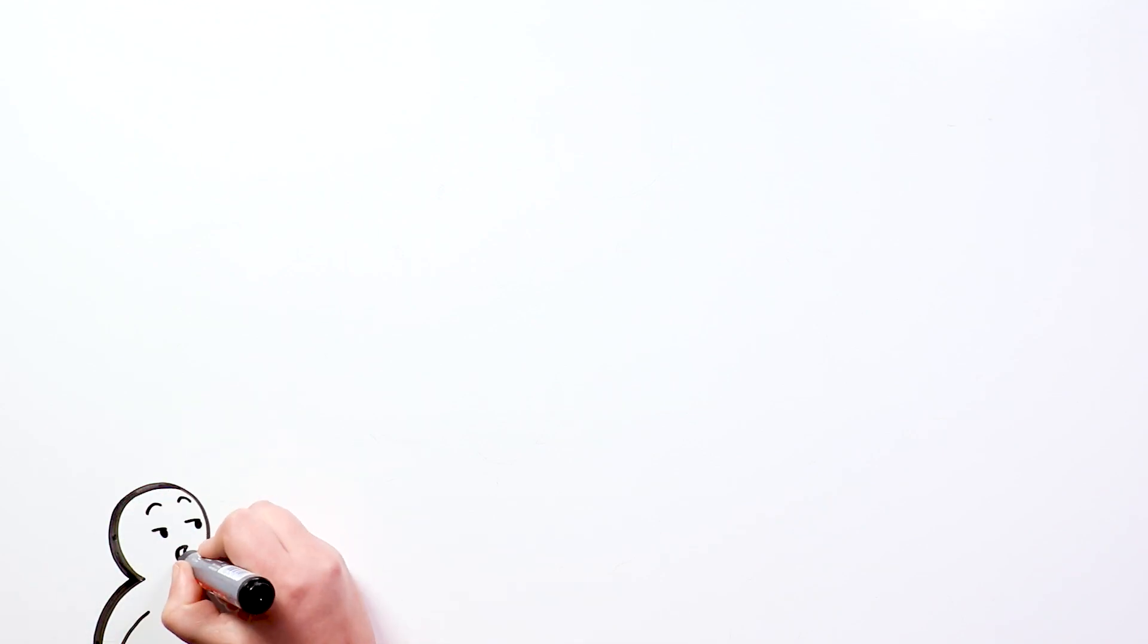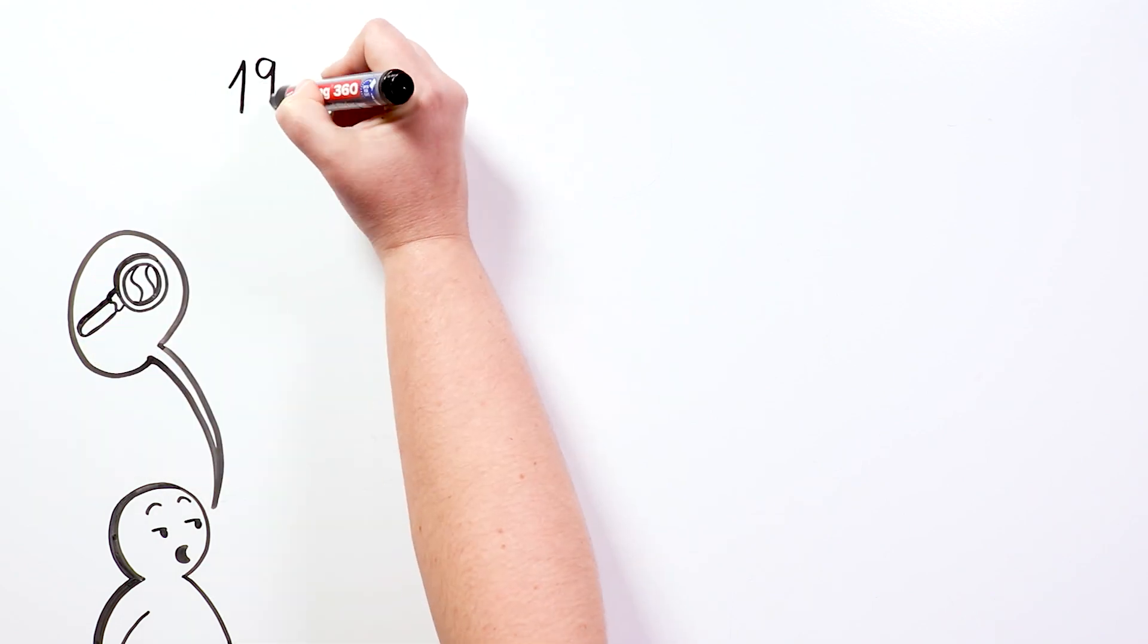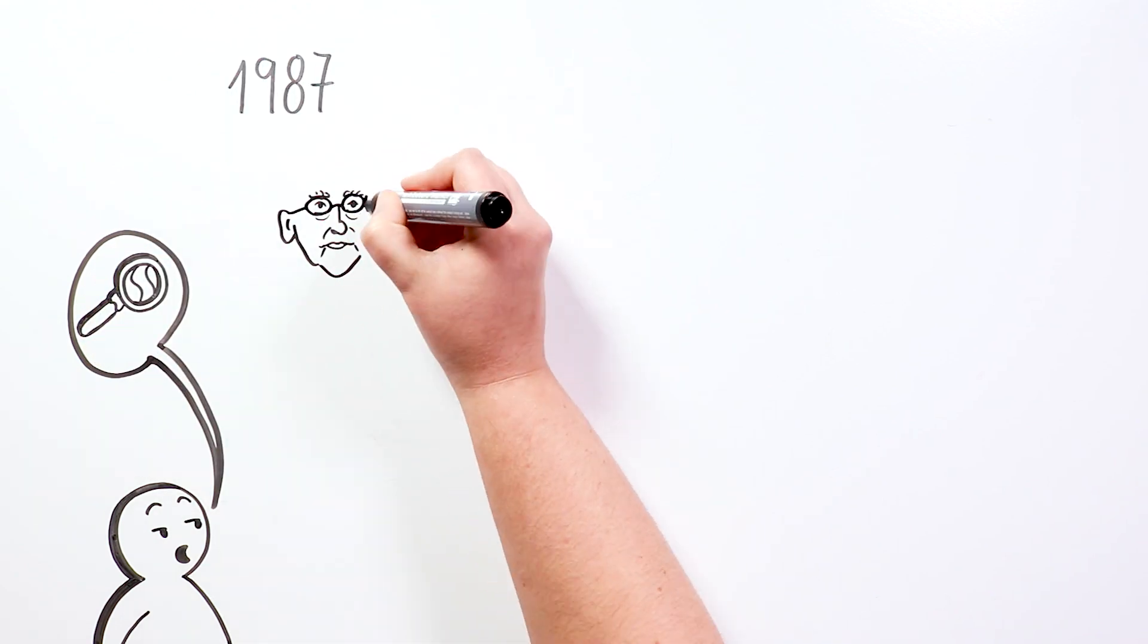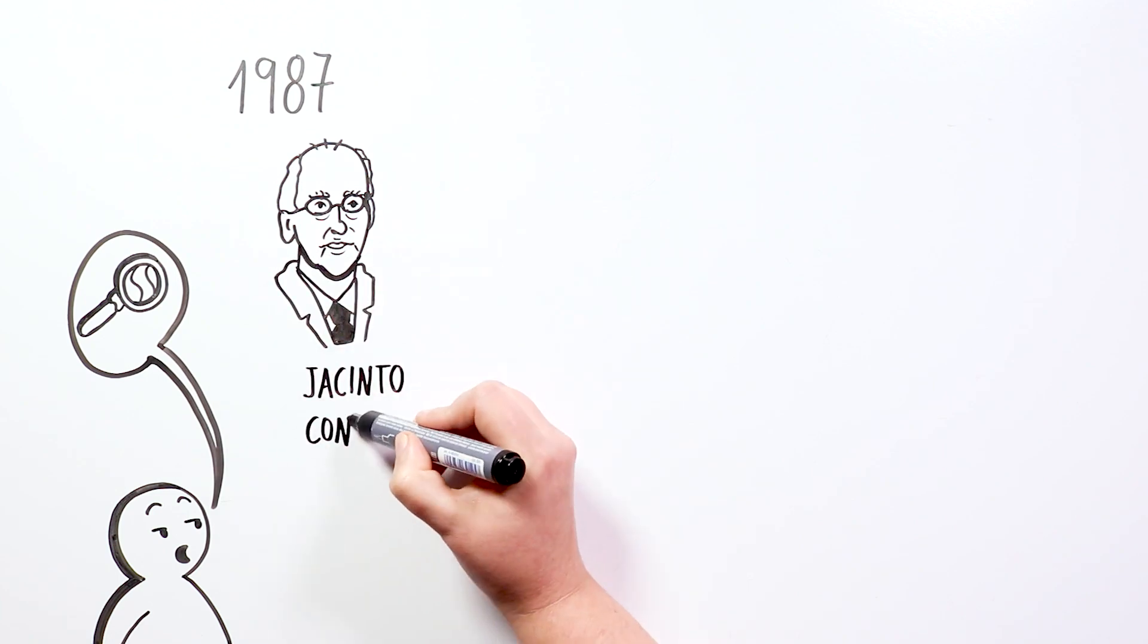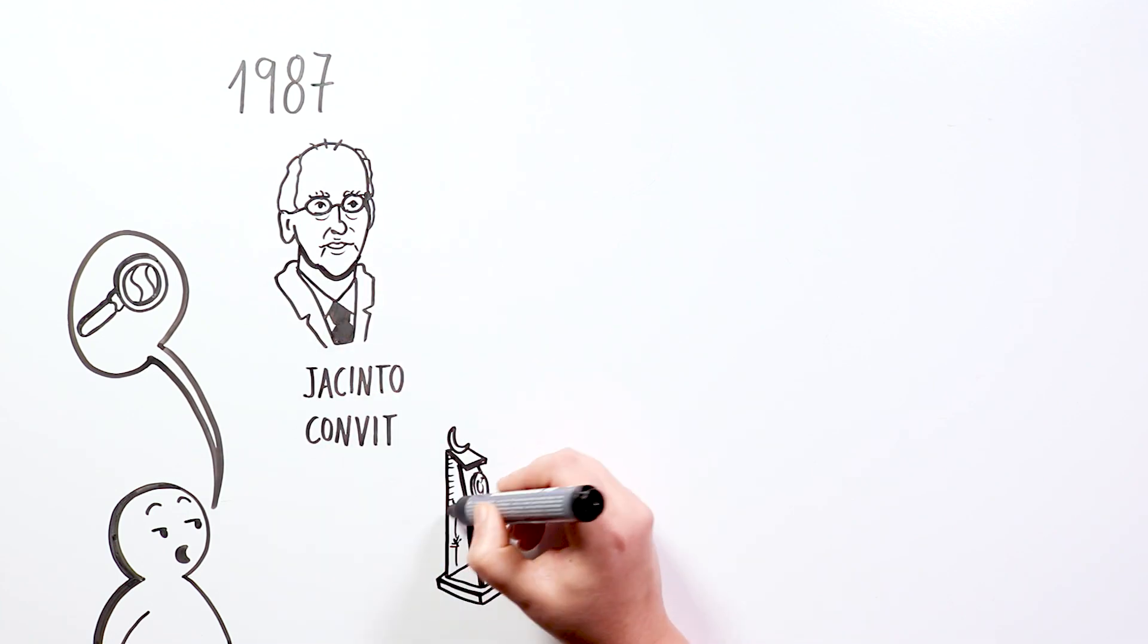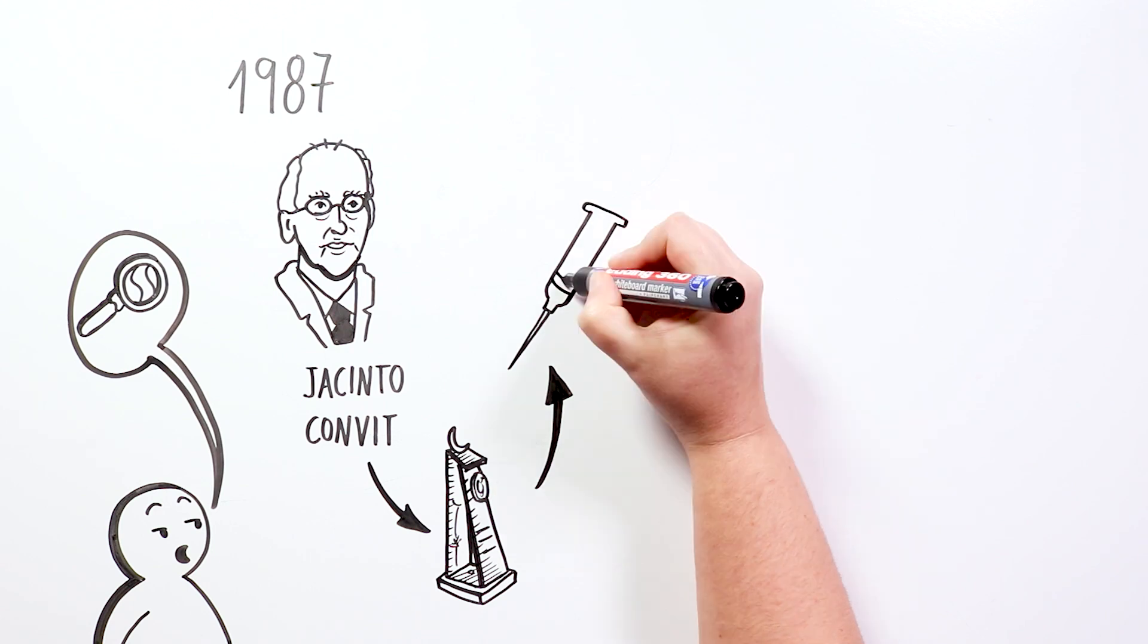Many believe not, but it is a curable disease. The most important thing is to detect it as soon as possible. In 1987, the Venezuelan doctor and researcher Jacinto Convit was awarded the Prince of Asturias Award for discovering a vaccine for its cure.